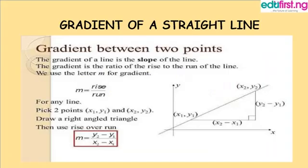Now we have to look at the gradient of a straight line first so it will give us an insight of what to expect when we enter gradient of a curve. So gradient between two points. The gradient of a line is the slope of the line. The gradient is the ratio of the rise to the run. We use letter m to represent gradient. That is m equals rise over run.